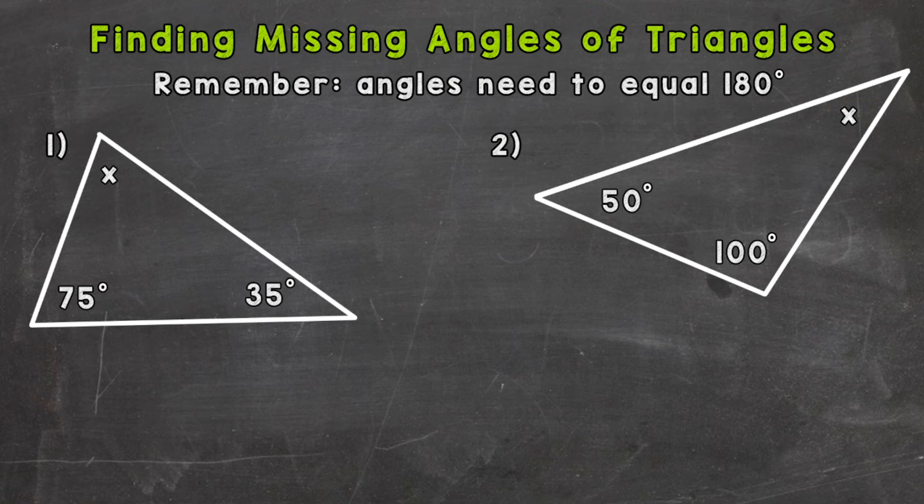Now up top is a very important note we need to keep in mind. Remember angles need to equal 180 degrees and this 180 degrees is the magic number for every single triangle no matter what it looks like or how it's classified.